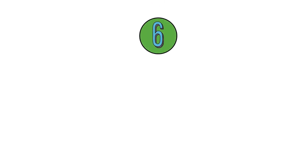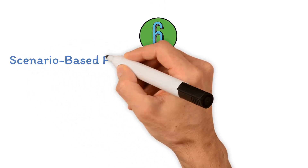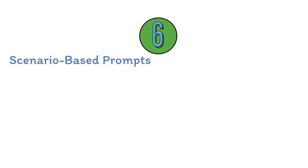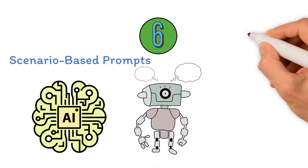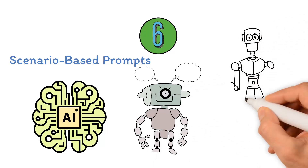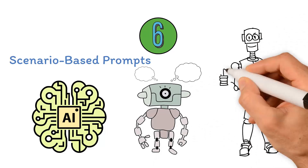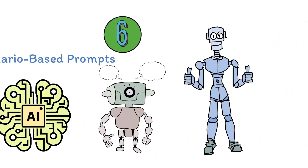Strategy six: scenario-based prompts — presenting the AI model with hypothetical situations or scenarios that encourage creative problem-solving and application of knowledge.